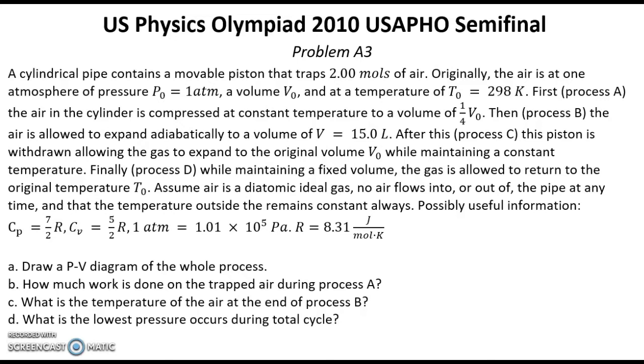Solution: First, let's draw a PV diagram of the whole process. In point 0 we have volume V0, pressure P0, and temperature T0. We have an isothermal compression from point 0 to point 1 while volume decreases four times, which means that pressure increases four times.